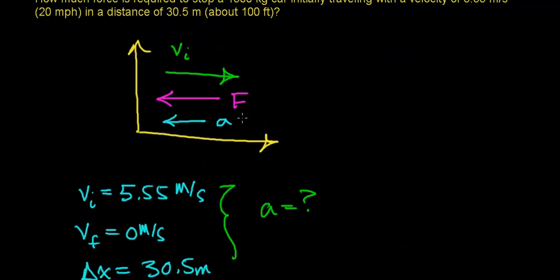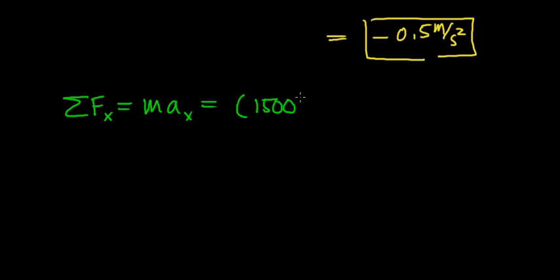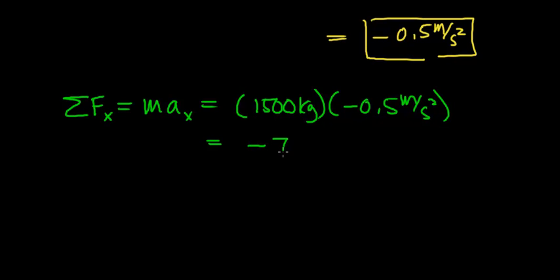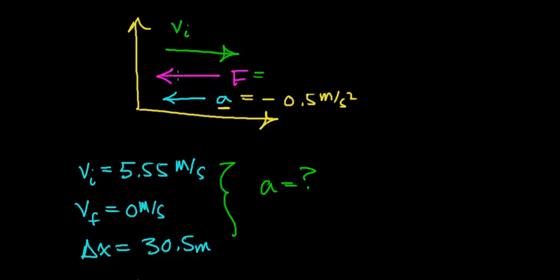Looking back, the acceleration is negative 0.5 meters per second squared — in the opposite direction to the initial motion, as expected. To find the force required to stop the car, we sum the forces in the x direction, which equals mass times acceleration in the x direction. There is one force acting in the x direction — the force required to stop the car (which in a later video we'll identify as friction). With a mass of 1500 kilograms and an acceleration of negative 0.5 meters per second squared, you get a force of negative 757 newtons. The negative sign indicates the force is applied opposite to the direction of motion, so the magnitude is 757 newtons.